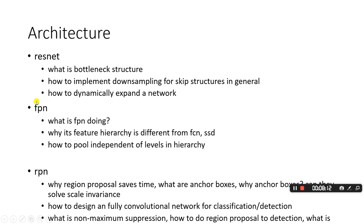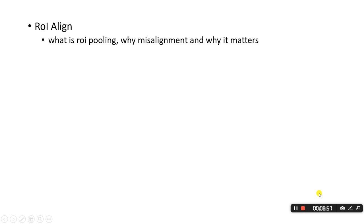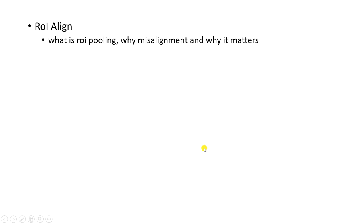The third component is the Region Proposal Network. It's important to understand why we want region proposals — it makes things really fast. This was originally proposed in Faster RCNN. The other important thing is what we call ROI Align.